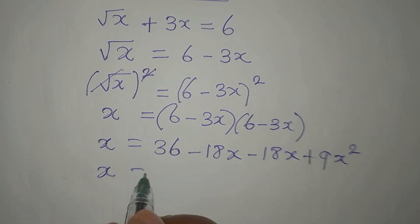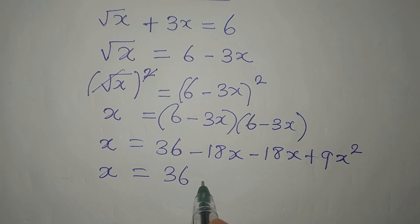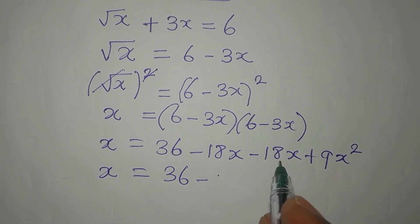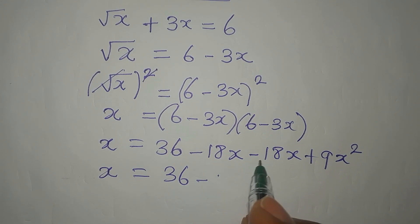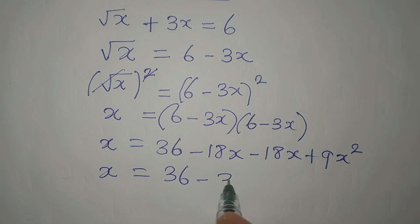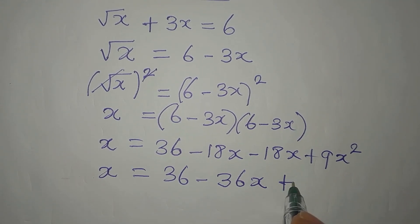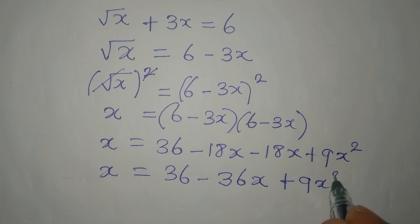Now, x here will be equal to 36 minus, if I add this, minus 18x minus 18x will give us minus 36x. Then plus 9x squared.